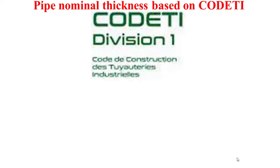Well, first it's to note that CODETI is a French calculation code that permits to size the piping. CODETI, to say in French, code de construction de tuyauterie industrielle. In English, code of construction of industrial piping.